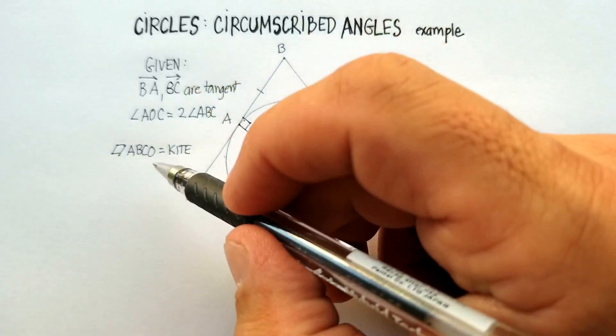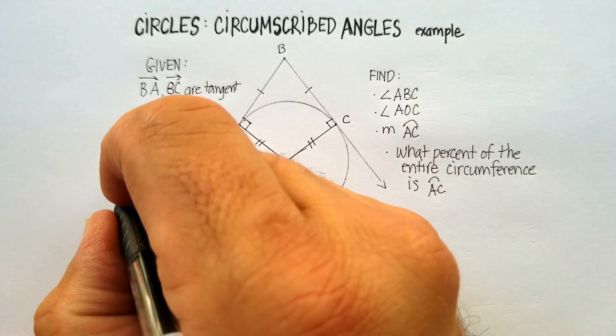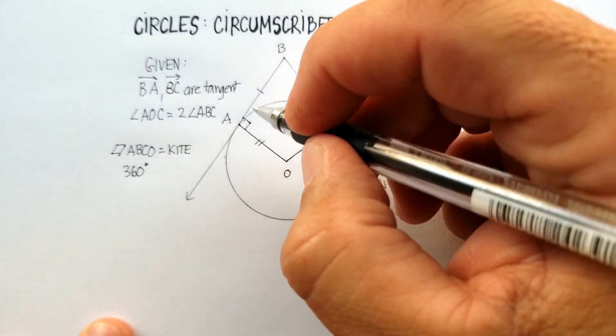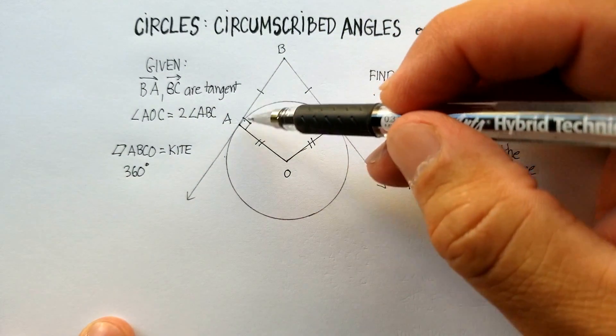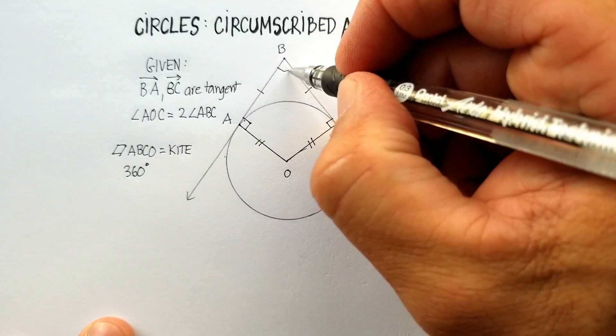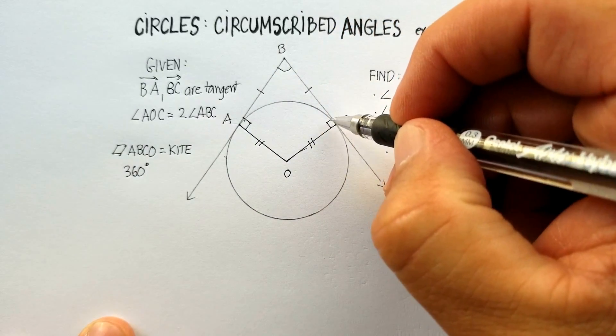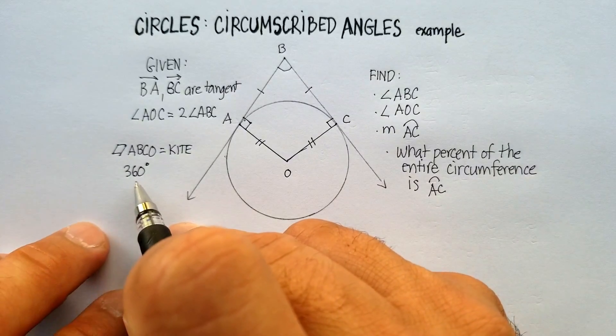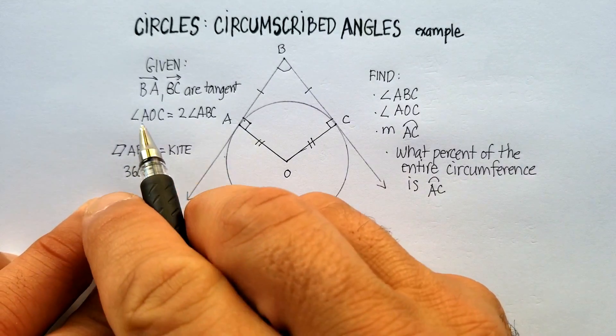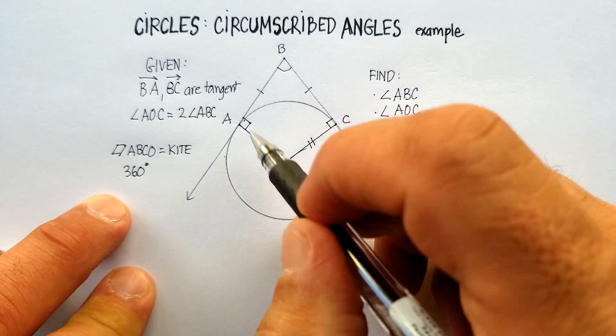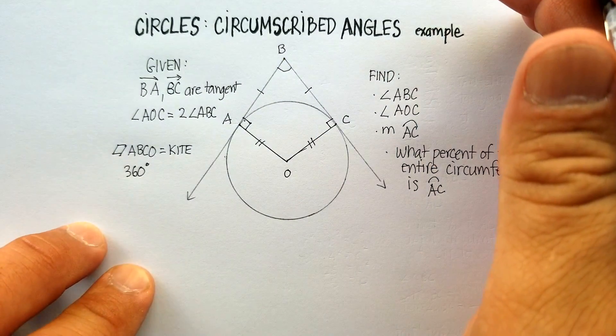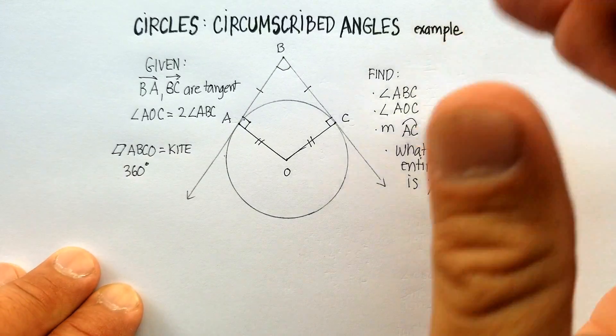We also know that any quadrilateral has 360 degrees internally. So, if we were to measure this angle, this angle, this angle, and this angle, it should add up to 360. We also happen to know that this angle is twice as large as that one. Okay, so let's start doing some information here.